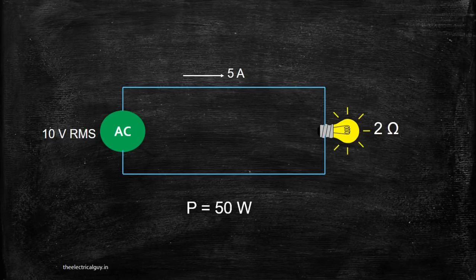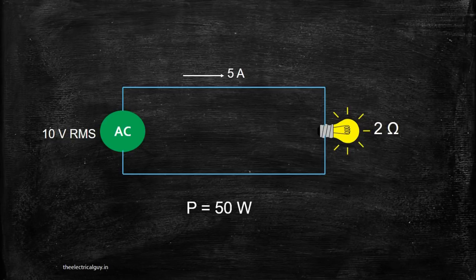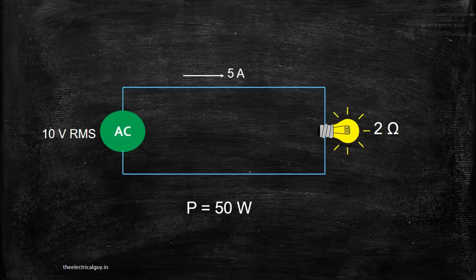RMS value, peak value, average value will change with different waveforms. This value will be different for sine wave, for square wave and for triangular wave.